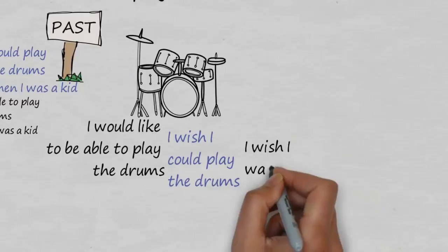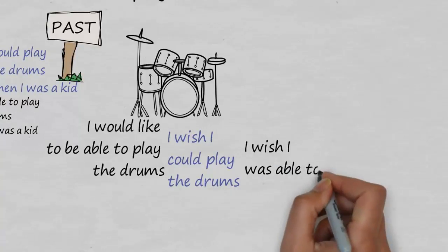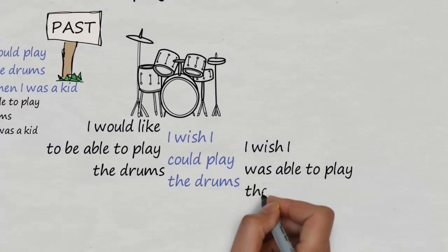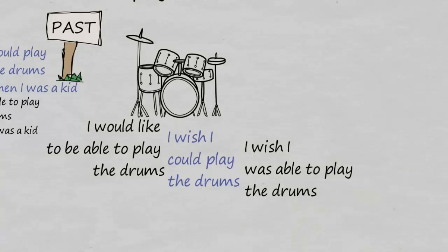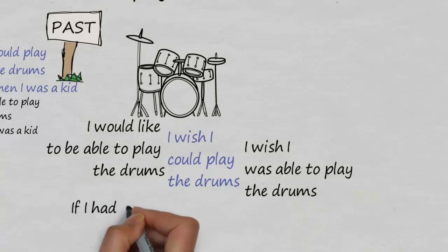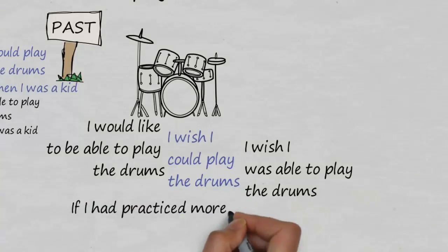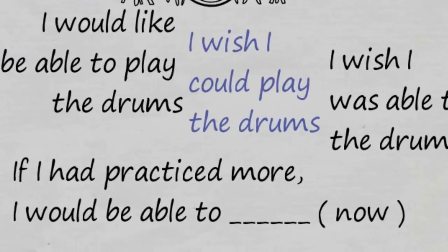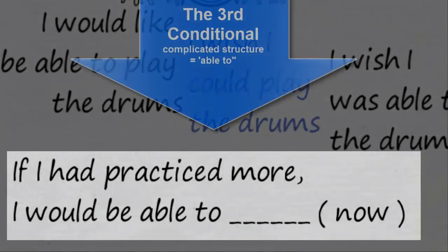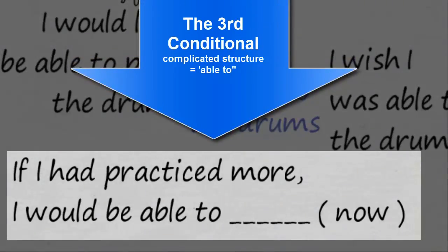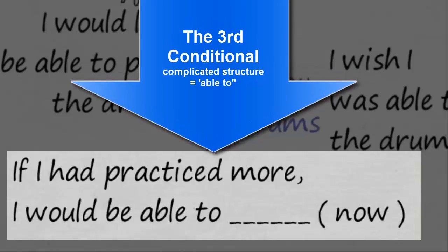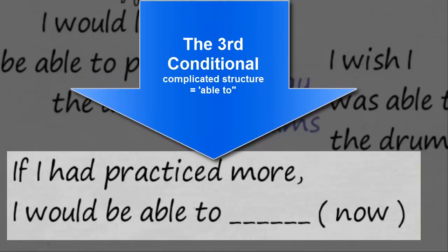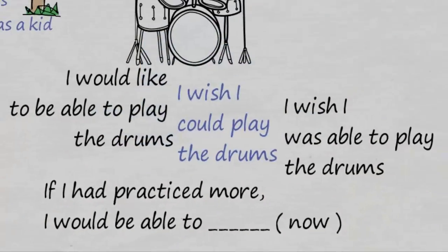However, when we move to a more complicated tense like the third conditional, you need to think: don't use could — we now want to switch to able to. So the third conditional, for example: 'If I had practiced more, I would be able to play the piano.' This is a good example of when we must use able to. For the third conditional, we cannot use could.